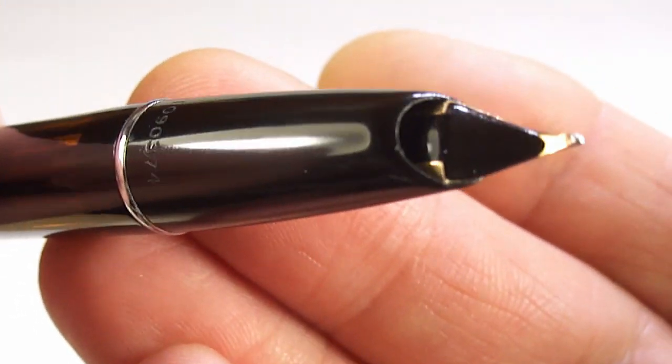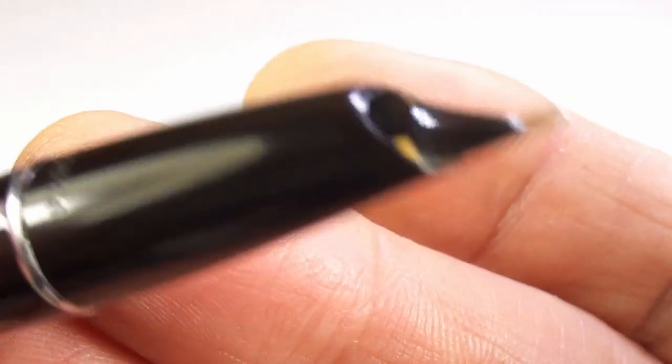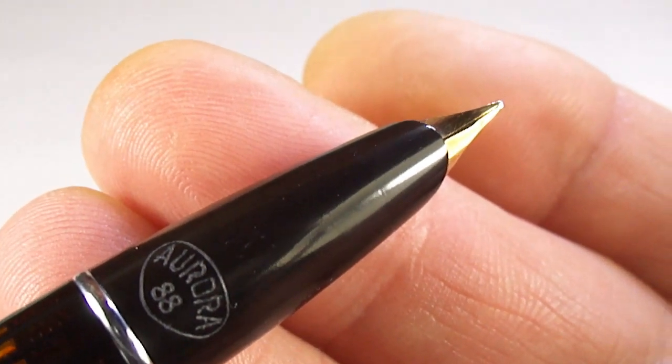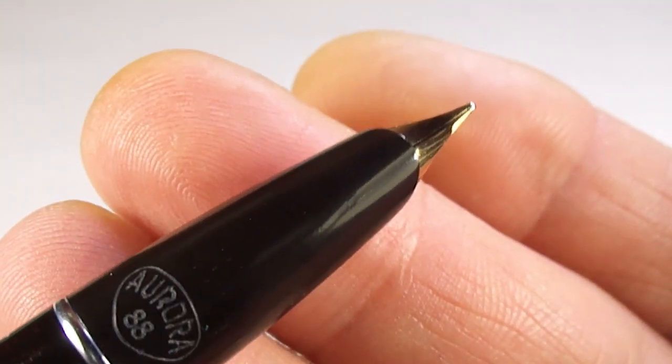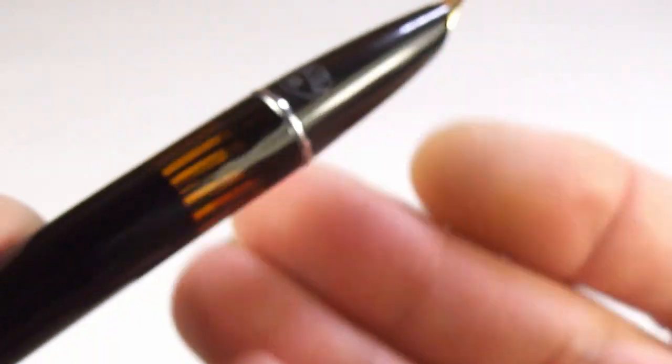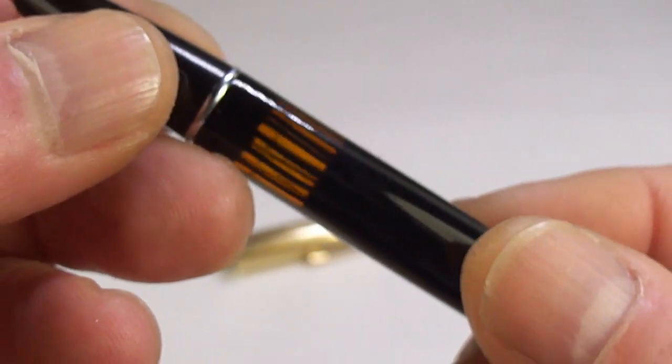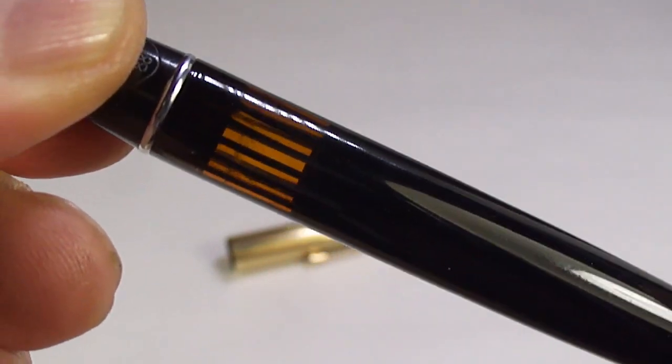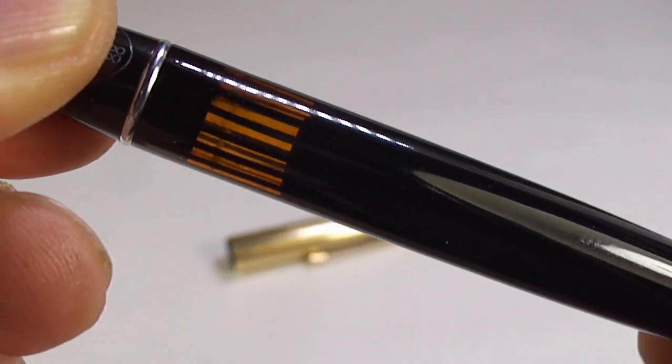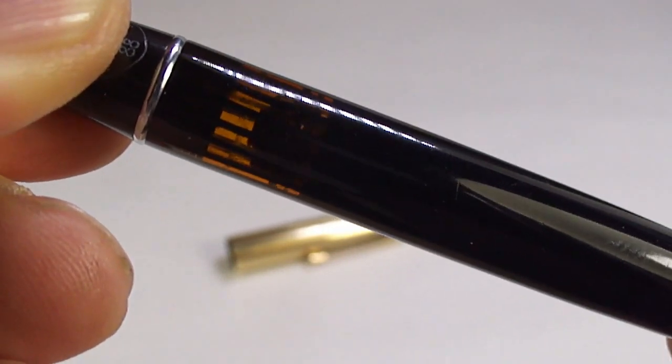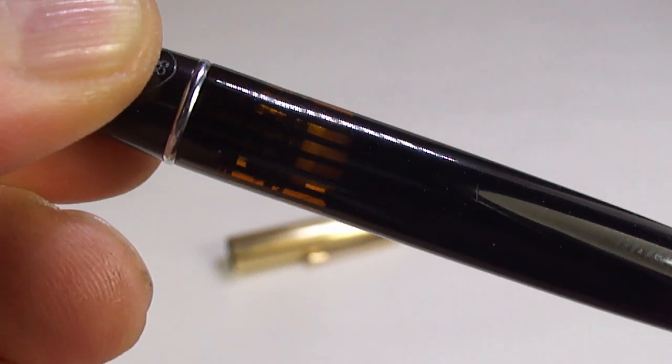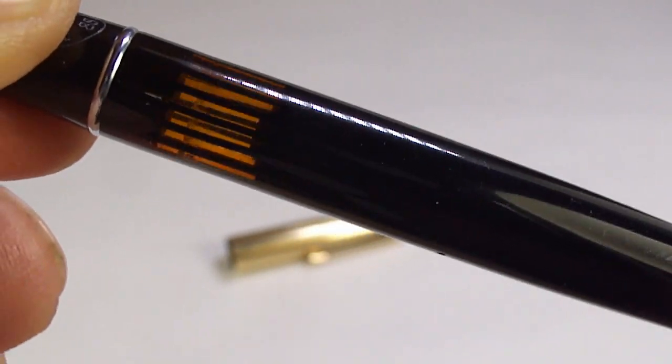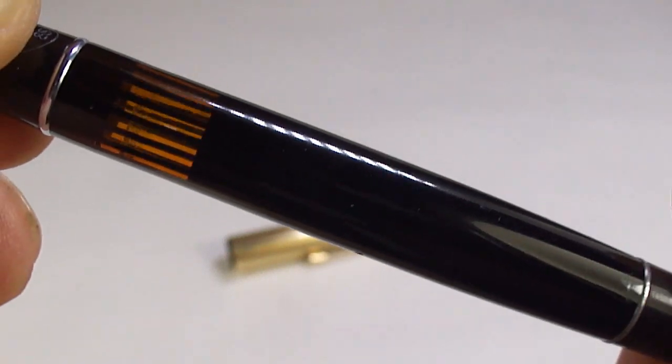This nib here, you can see it's slightly semi hooded. You can't actually see it, but it has Aurora 585 on the nib itself, so we've got a gold nib. There you can see the ink view. If we turn the blind cap here for you, nice and slowly, you'll see the piston makes an appearance. The piston is now in the ink view window there, and if I turn it back again it will retract back into the barrel.